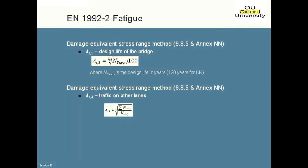Lambda_S3 is a factor for design life. The fictitious vehicle has been derived to mimic the damage of real traffic over a 100-year period. So if your design life is more or less than 100 years, you have to factor up or down the effect of the vehicle. Because the UK National Annex sets our design life to 120 years, lambda_S3 becomes very slightly greater than 1 for UK design. Incidentally, I think this is the only place in the whole Eurocode suite where our UK decision to change the default bridge lifetime from 100 to 120 years actually has any impact — there's no difference in cover, for example, or any other provisions.